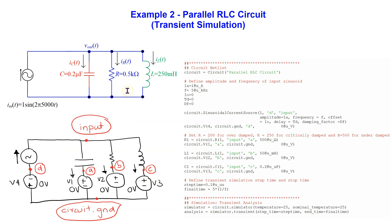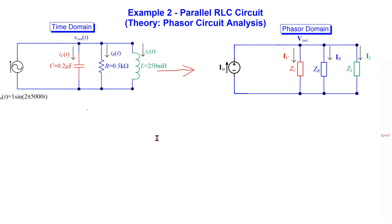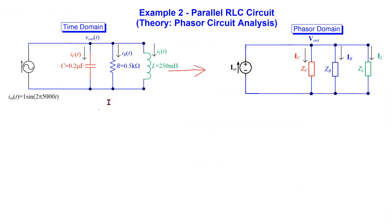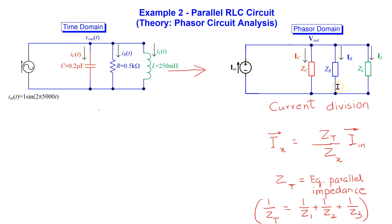For R equal to 500 ohms, this parallel RLC circuit is underdamped. Similar to before, for circuit analysis, we transform the time domain circuit into phasor domain using phasors and impedances. The parallel RLC circuit can be easily analyzed using the current division principle. The current in each branch can be calculated using this general formula, where ZT is the equivalent parallel impedance, which can be calculated as shown.